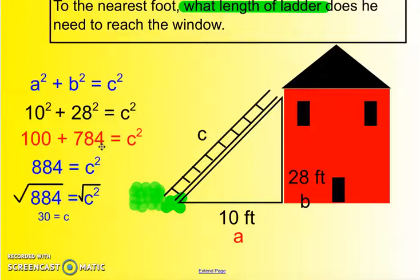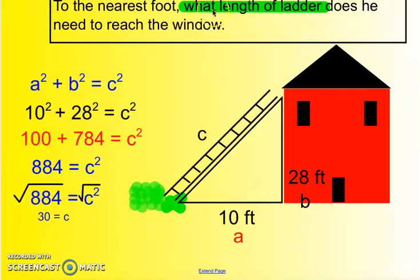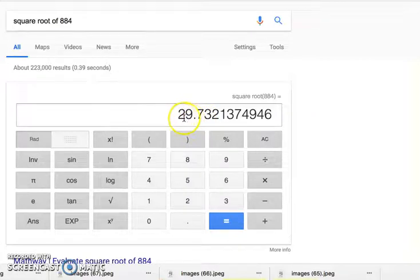Remember, our last step is to take the square root to find out what C is. If we take the square root of 884, we actually get an answer of 29.732137, etc. But in the problem, it actually says round to the nearest foot.